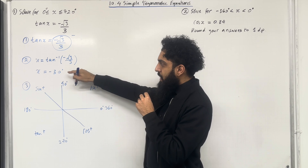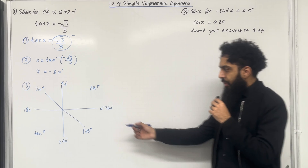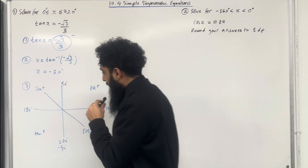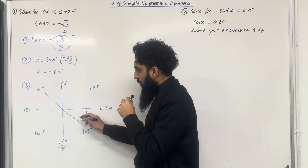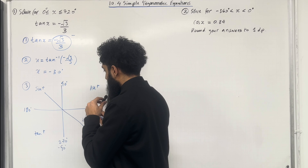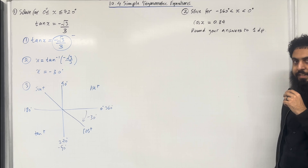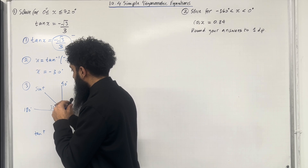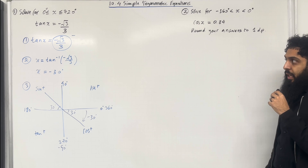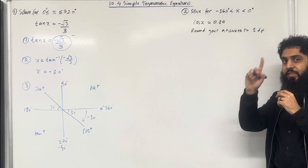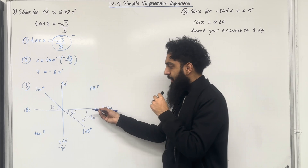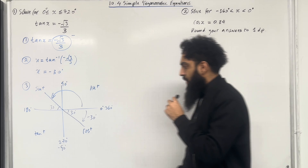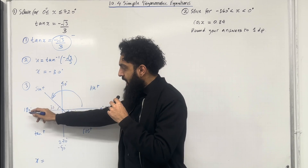Going back to x equal minus 30 degrees, let's label that on the CAST diagram. Starting at 0 degrees, going clockwise measures negative angles. So minus 30 degrees is the angle to that line, and the acute angles labeled with the x-axis will be the positive of this — 30 degrees each. We want positive solutions from 0 to 720, so going anti-clockwise to the first line gives the first solution: x equals 180 take away 30, which is 150 degrees.